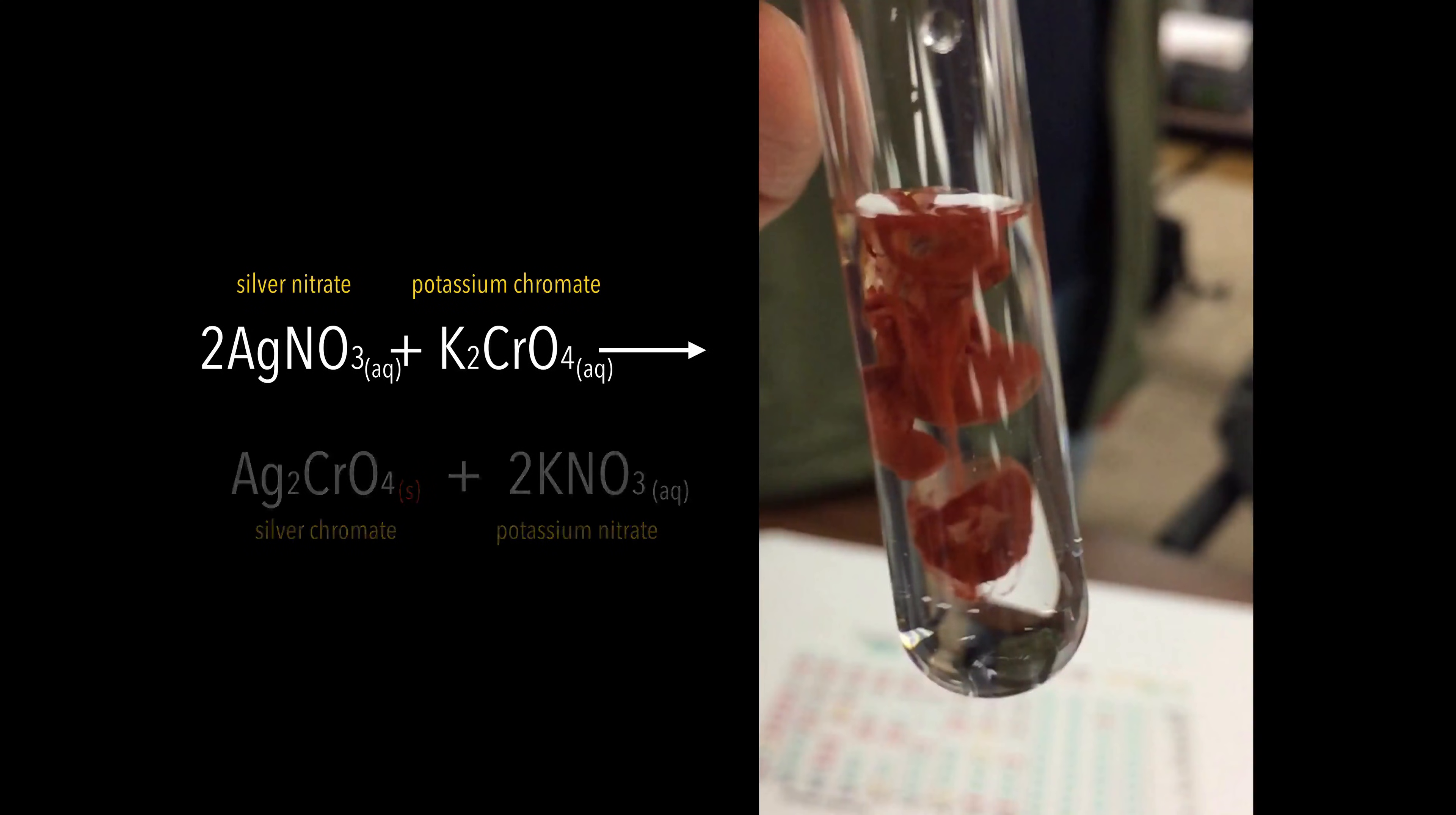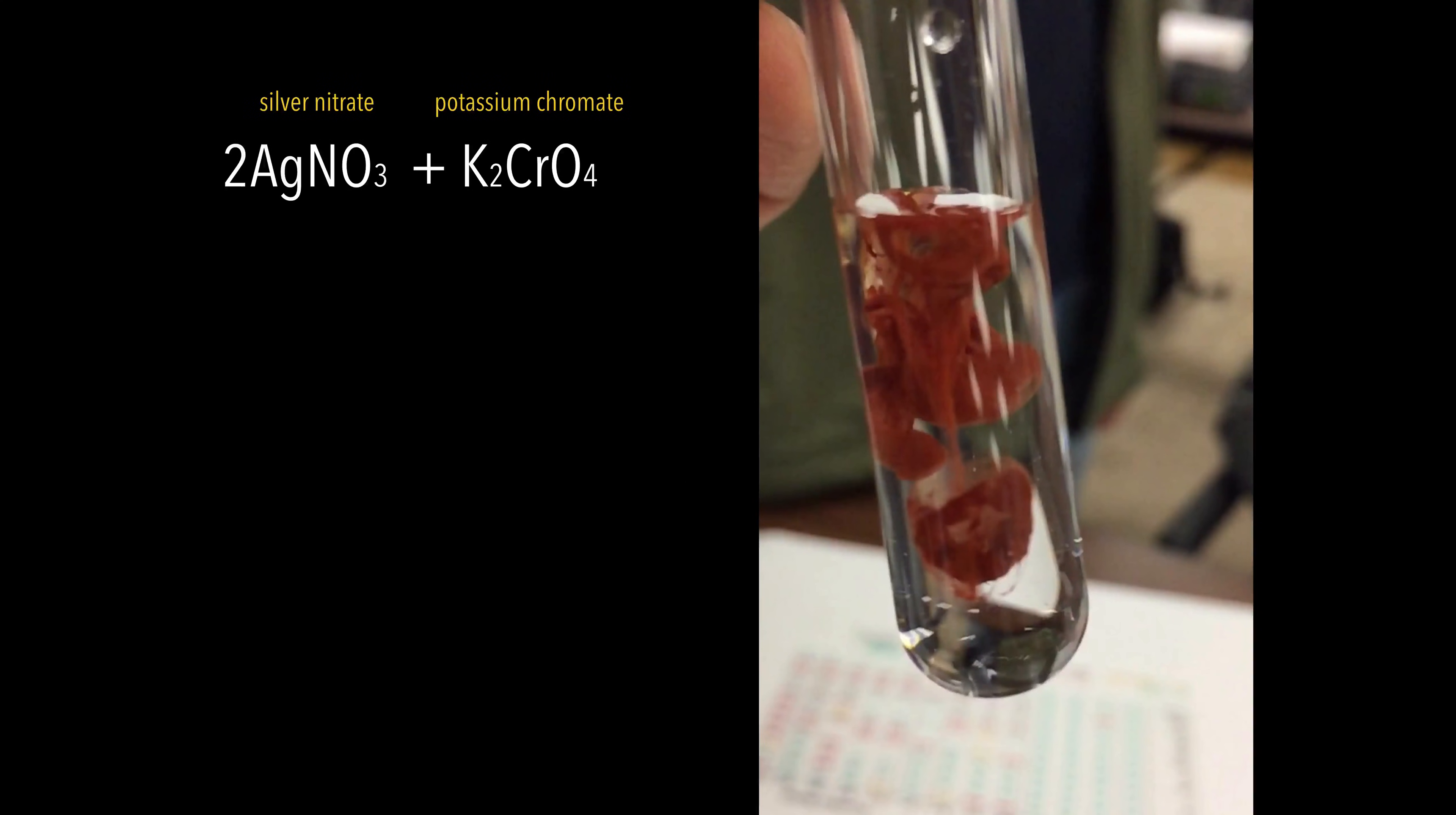Let's take a look at the reactant side. You have silver nitrate aqueous and potassium chromate aqueous. But you wouldn't know that by just looking at the equation. When you take a deeper look, you'll see that these compounds are not bonded together. They're separate, dissociated in the liquid into the ionic stage.